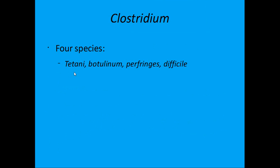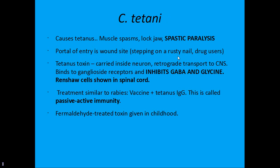Now we switch to the Clostridium genus. Clostridium has four species: two straightforward ones are tetanus and botulism; the other two cause gas gangrene and pseudomembranous colitis.